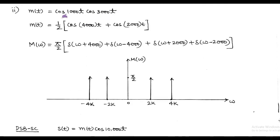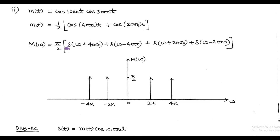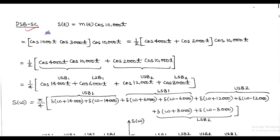The next modulating signal is MT equals cos(1000t)·cos(3000t). Using the formula for 2cos(A)cos(B), we multiply and divide by 2 to get MT equals 1/2[cos(4000t) plus cos(2000t)]. Taking the Fourier transform, M(ω) equals π/2[δ(ω+4000) plus δ(ω−4000) plus δ(ω+2000) plus δ(ω−2000)], giving impulses of value π/2 at ±2000 and ±4000.